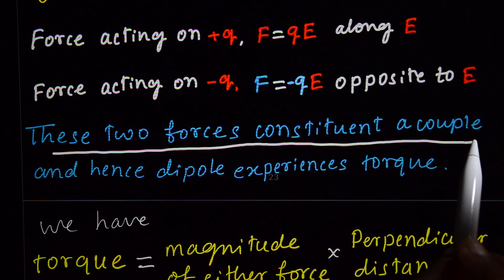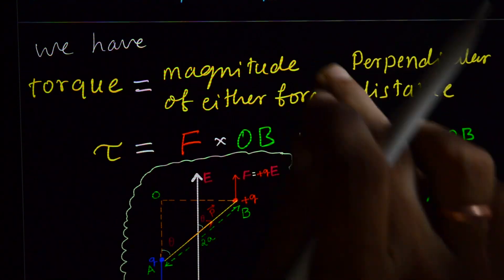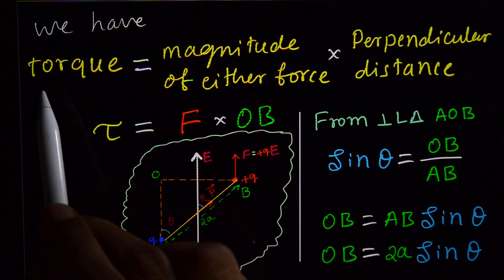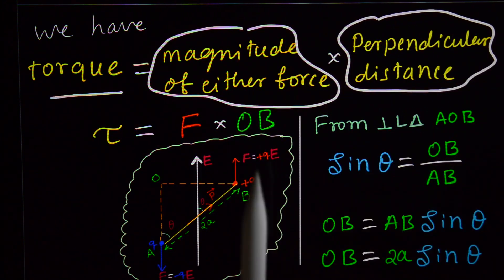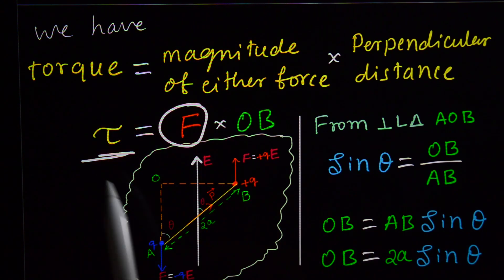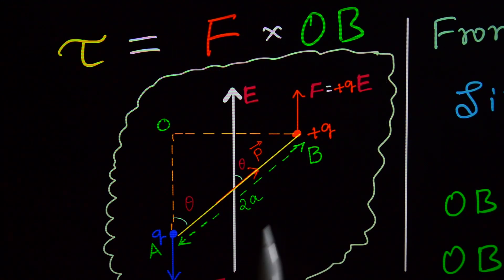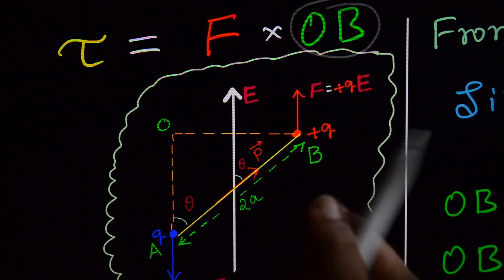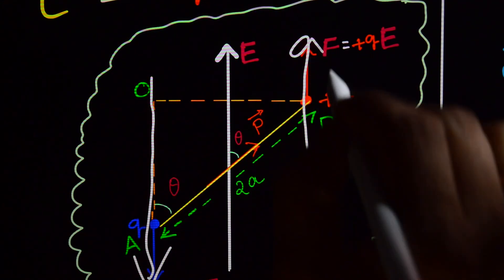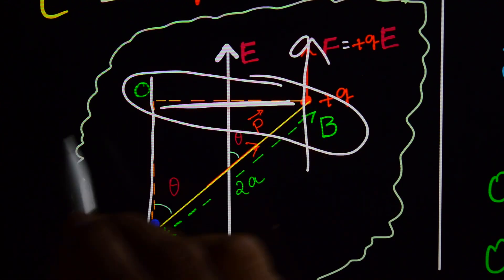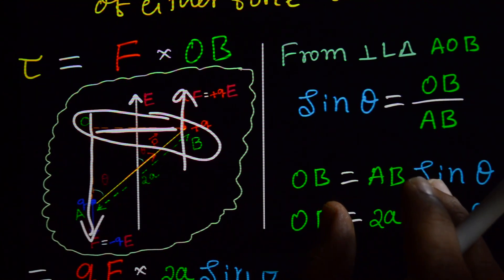These two forces constitute a couple, and hence the dipole experiences a torque. By the definition of torque, torque equals the magnitude of force multiplied by the perpendicular distance OB between the two forces. So torque equals F into OB.